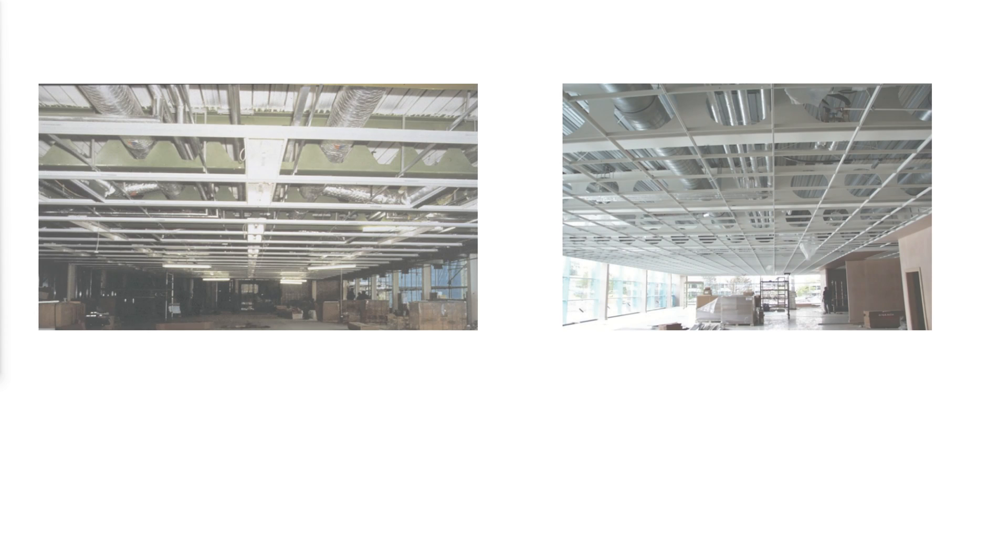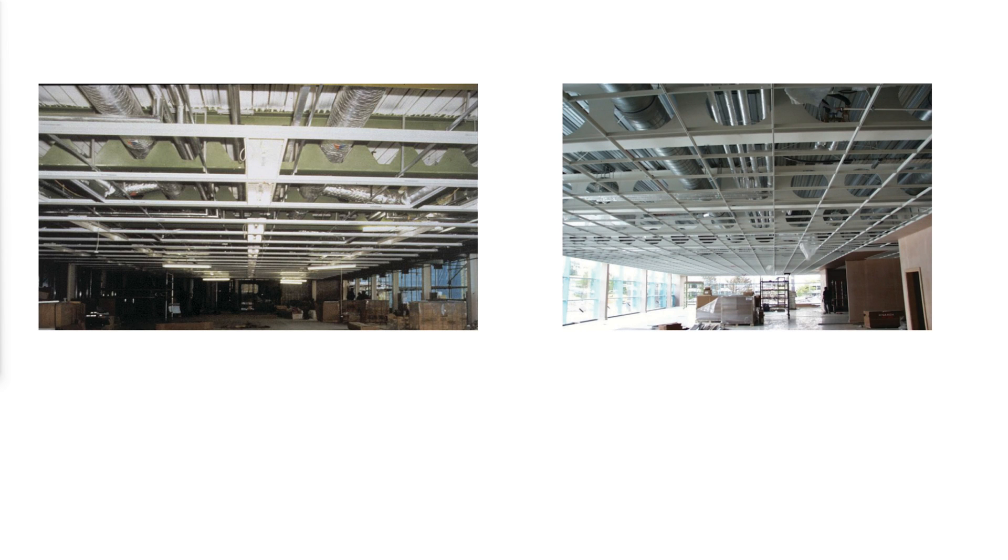One of the greatest advantages of castellated and cellular beams is the ability to run utilities directly through the web openings. The openings in the beams may be utilized for the installation of conduit, HVAC and sprinkler piping, and any other utility system. Use of castellated and cellular beams provides the owners and future tenants the flexibility to install additional wiring for telephones, computers, or other office equipment.